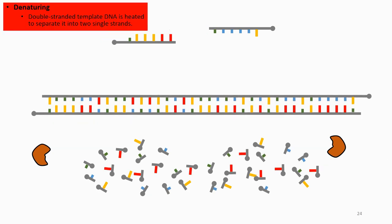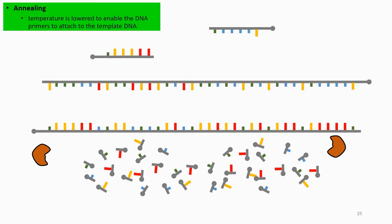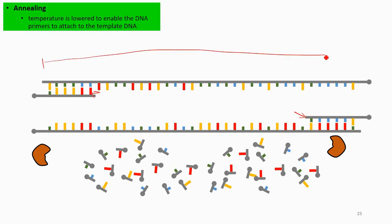During denaturation at 94°C, the double-stranded DNA separates. Then the temperature drops to 45–60°C for annealing. You need a pair of primers that attach in both directions, so you will amplify only the target region between them. Of course the full DNA is much longer, but you only amplify that specific region.